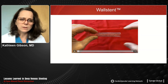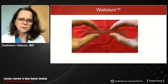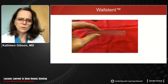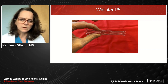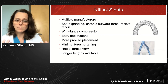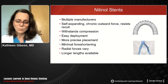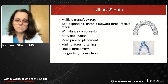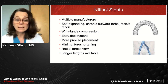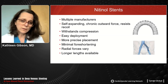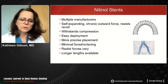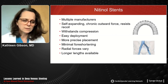A video clip shows the Wall Stent — it's a stiffer stent that tends to straighten out the vein and elongates when compressed. Open-cell nitinol stents from multiple manufacturers are self-expanding, resist recoil, and withstand compression well. They're easy to deploy and tend to land right where expected, foreshortening minimally. They cannot be recaptured like the Wall Stent can, but they are available in longer lengths. Radial forces vary depending on which nitinol stent is placed.